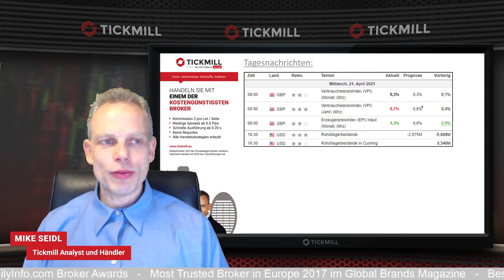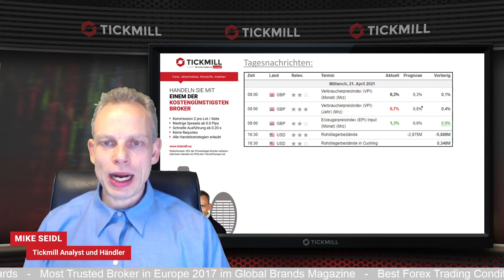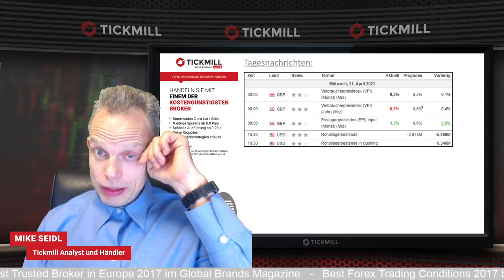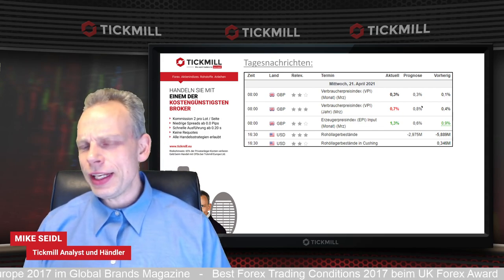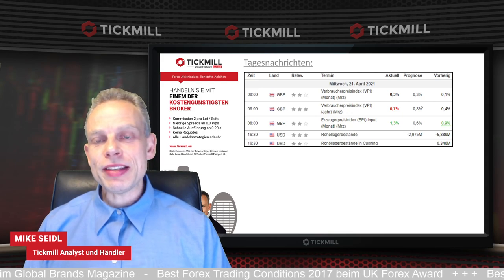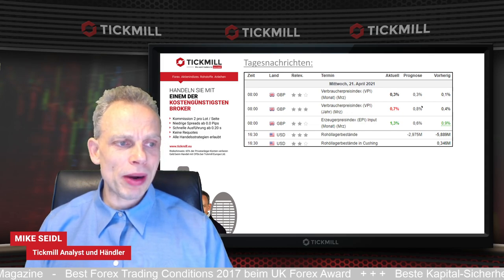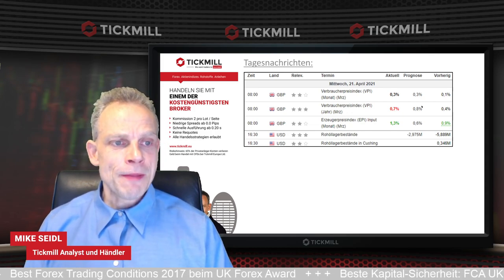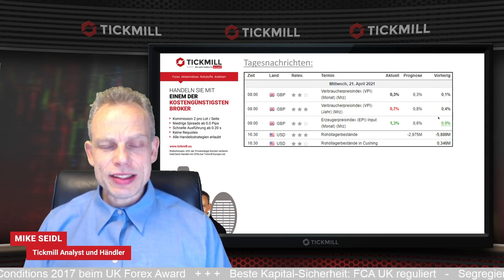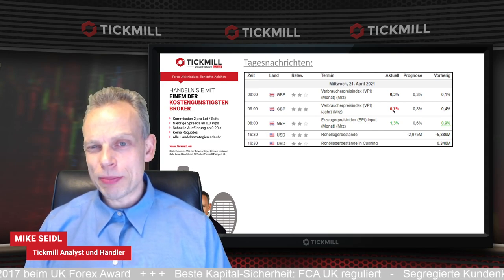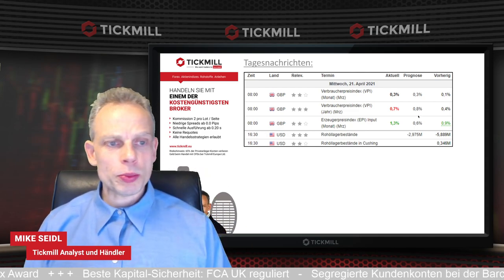Diese Woche ist nicht wirklich geprägt von großen planbaren Nachrichten, wie wir sie sonst immer von Zentralbanken oder wirtschaftlichen Indikatoren kennen – es ist ein bisschen weniger diese Woche. Der wichtigste Event kommt morgen mit der EZB. Heute gibt es Daten von der Verbraucherpreisseite und den Erzeugerpreisen aus Großbritannien: Der Verbraucherpreisindex ist angestiegen von 0,4 auf 0,7%, lag zwar leicht unter den Erwartungen der Analysten, aber auch hier geht es in Großbritannien stetig voran.